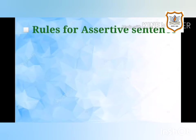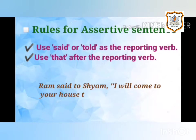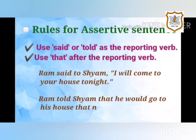Rules for assertive sentences: Use 'said' or 'told' as the reporting verb, and use 'that' after the reporting verb. For example, 'Ram said to Shyam, I will come to your house tonight.' The answer is: Ram told Shyam that he would go to his house that night.